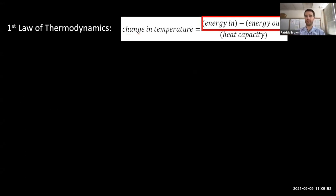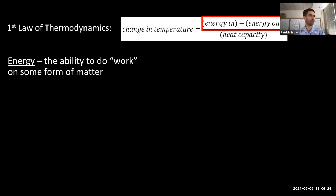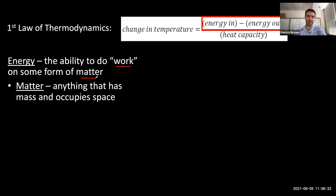First, thinking about the energy part — we talk about energy a ton in this class, in terms of energy from fossil fuels, energy embedded in the food we eat, and the energy budget equation. So we should define what energy actually is. In physics, energy is defined as the ability to do work on some form of matter. Matter is just things — anything that has mass, anything you can weigh, it occupies space.